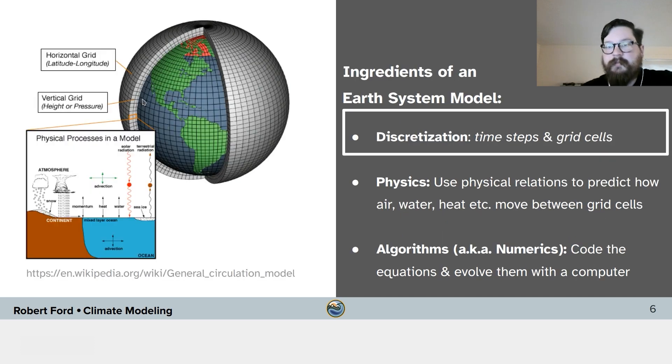Now let's go over some of the main ingredients of ESMs and GCMs more generally. So the number of equations and the spatial complexity of ESMs requires us to solve them numerically, and this means discretizing space and time. All of the components of the climate system must be divided into grid cells that physical quantities can move between over some specified time step.